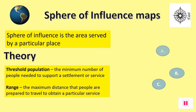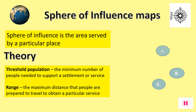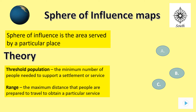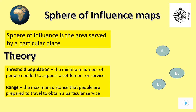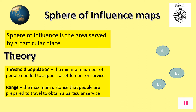The idea of Sphere of Influence is based upon two key ideas. Threshold population is the least amount of customers a shop really needs for it to be worth opening, whereas range is how far people would be willing to travel to get to that shop or place. The model shown here features three small corner shops — A, B and C.